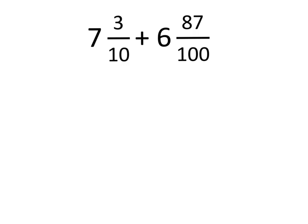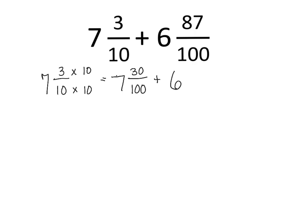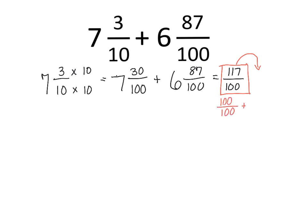Next one: 7 and 3 tenths plus 6 and 87 hundredths. So, 7 and 3 tenths — we want to rename that denominator into hundredths. So let's put 7 and 3 tenths and we're going to multiply the top and the bottom by 10. And we're going to get 7 and 30 hundredths, plus 6 and 87 hundredths. We get 117 over 100. That is an improper fraction, so we have to pull out those wholes. I only see one whole there, and we're left with 17 hundredths. So this becomes 1 whole and 17 hundredths.